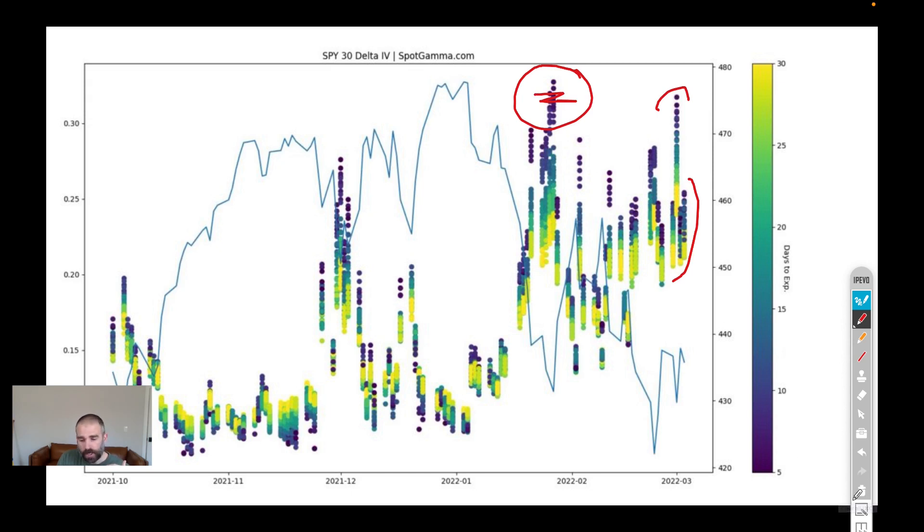I believe on an intraday basis we have, but still not on a closing basis. Volatility has been somewhat contained, even though it is elevated. The VIX is at 33 this morning. There's something called the rule of 16, which allows you to translate implied volatility into a daily move. If you divide the VIX 33 by 16, you come up with about 2%. So the market is pricing in a 2% daily move right now from the S&P options perspective.